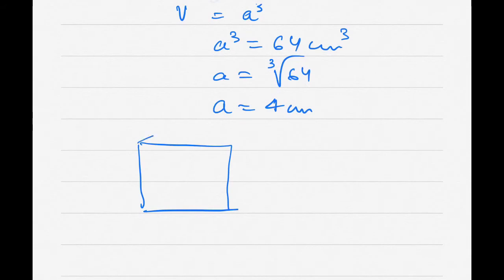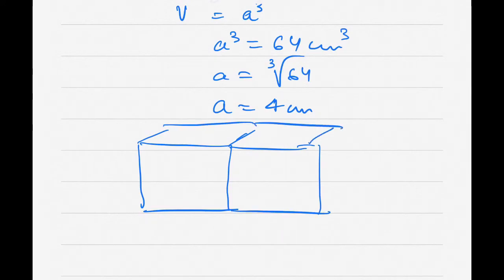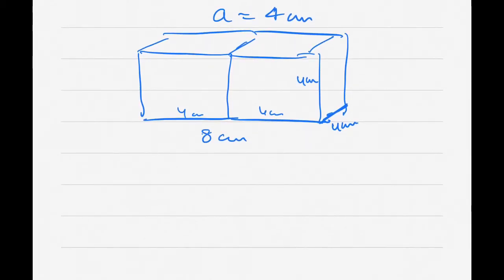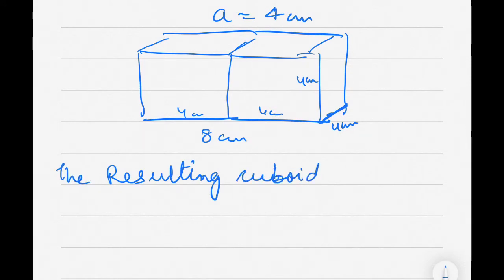They are joined end to end. So suppose this is one cube and this is another cube joined end to end. Each edge is 4 centimeter. So the resulting cuboid will have length 8 centimeter, but the height remains 4 centimeter and the width is also 4 centimeter.